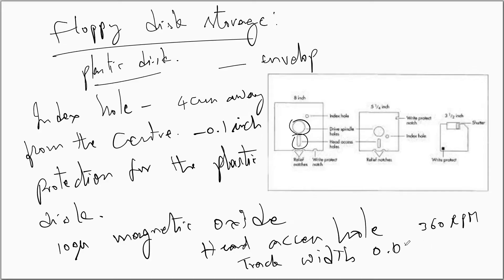The track width is 0.012 inches. Floppy disks come in various capacities: the three-and-a-half inch generally comes in 1.4 MB and the five-and-a-quarter inch comes in 1.2 MB. Now we shall see the magnetic drum storage.